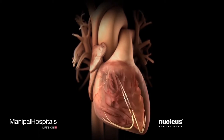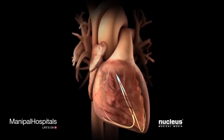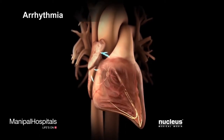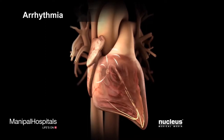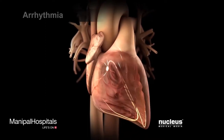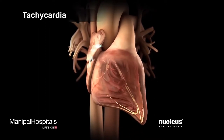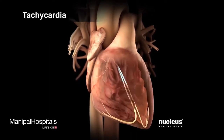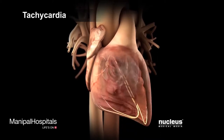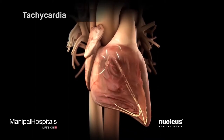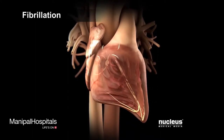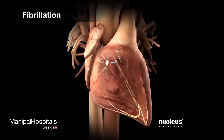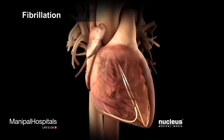An abnormal heart rate or rhythm, called an arrhythmia, occurs when there's a problem with the heart's conduction system. Tachycardia is a type of arrhythmia where the heart beats too fast. Fibrillation is a type of arrhythmia where the heart beats irregularly and may be too fast.